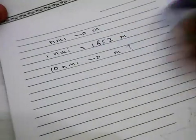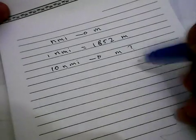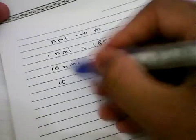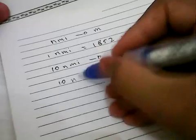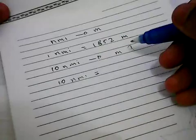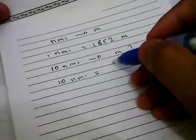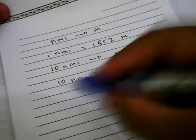Well, to solve this problem, the first thing you need to do is you need to write these 10 nautical miles and then you need to put an equation, I mean equal sign, and then you put this 10 over here to this place.